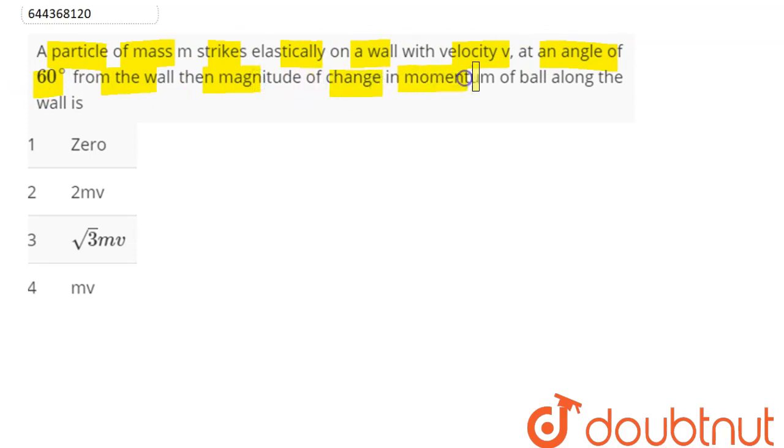So here suppose this is the wall. Now here a ball comes and this ball elastically hits this wall. Elastically means the velocity with which it approaches the wall, with same velocity it bounces back.